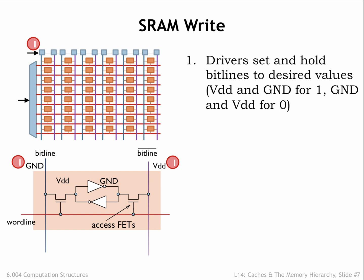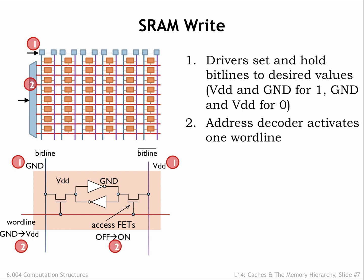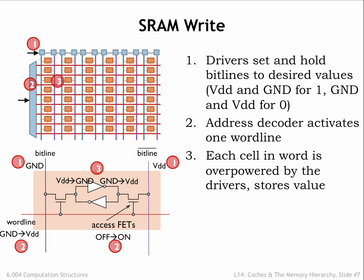Write operations start by driving the bit lines to the appropriate values. In the example shown here we want to write a 0 bit into the cell, so the left bit line is set to GND and the write bit line is set to VDD. The address decoder then sets one of the word lines high, selecting all the cells in a particular row for the write operation. The drivers have much larger MOSFETs than those in the cell's inverters, so the internal signals in the enabled cells are forced to the values on the bit lines, and the bistable circuits flip into the new stable configuration.